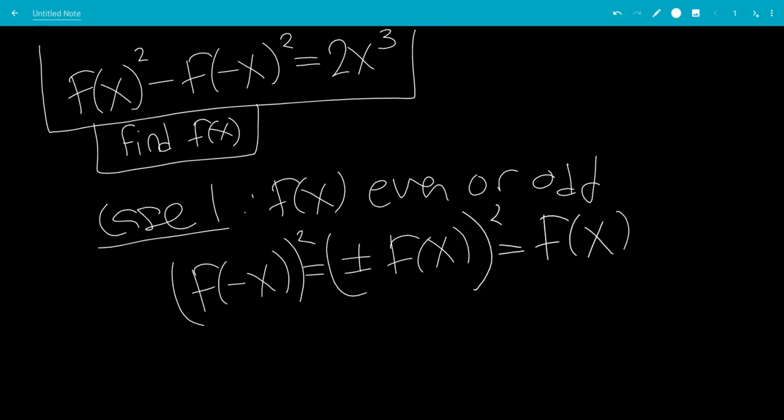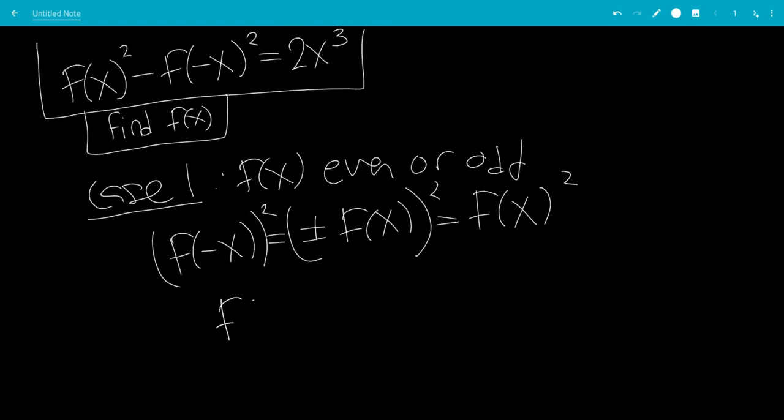That'll be f(x) quantity squared. That means f(x)² - f(-x)² is equal to 0, which is not equal to 2x³, which makes this a contradiction.